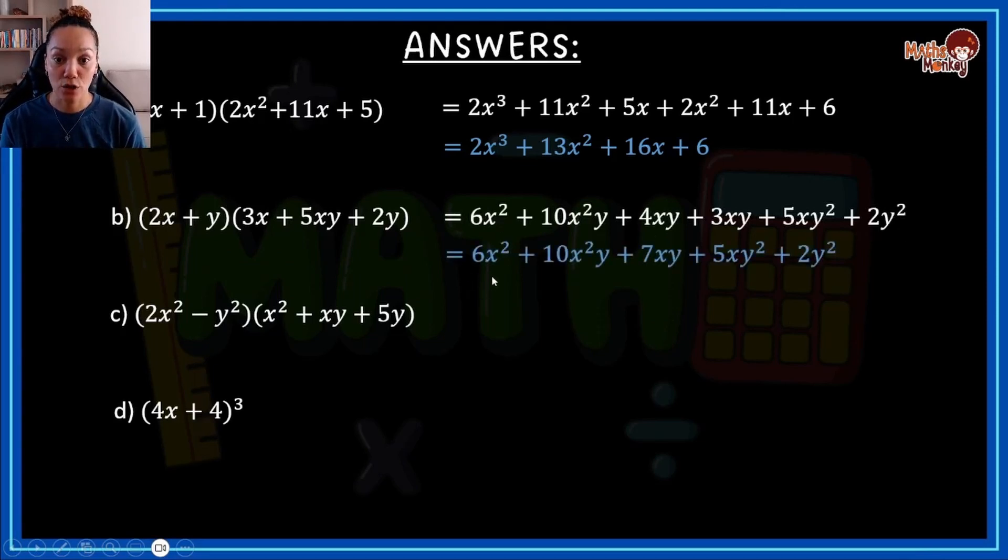Same with B. We multiply this out, we get this. And then our final answer would be 6x squared plus 10x squared y plus 7xy plus 5xy squared plus 2y squared. So the secret here is to note that very few of these were actually like terms. It was only these two.